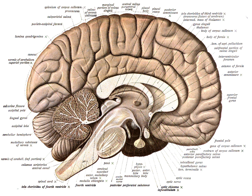At the tissue level, the nervous system is composed of neurons, glial cells, and extracellular matrix. Both neurons and glial cells come in many types. Neurons are the information-processing cells of the nervous system. They sense our environment, communicate with each other via electrical signals and chemicals called neurotransmitters across synapses, and produce our memories, thoughts, and movements.